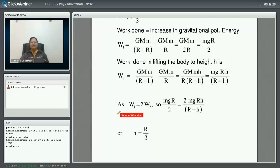Now, since by condition W1 is equal to 2 times W2, and therefore mgR upon 2 is equal to 2 times mgRh upon (R plus h), on solving this for h, we get the answer as R upon 3.